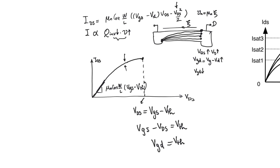This maximum occurs at the point at which the channel fully disappears at the drain. We have a charge profile where there are charges at the source end, but no charges at the drain end. We call this pinch-off.